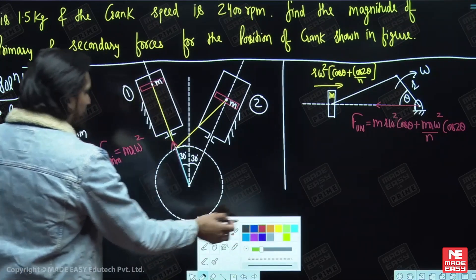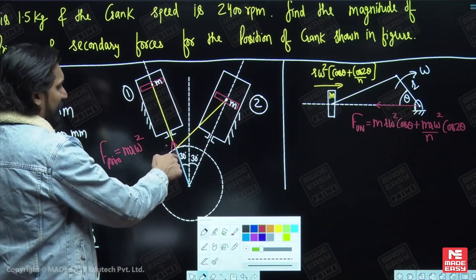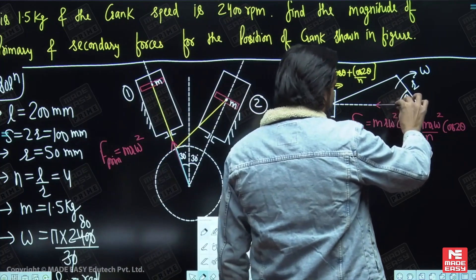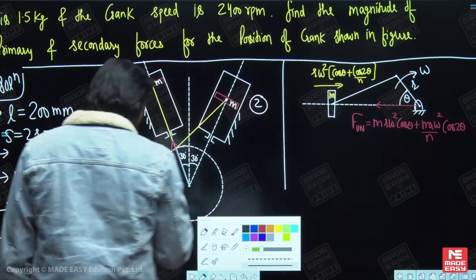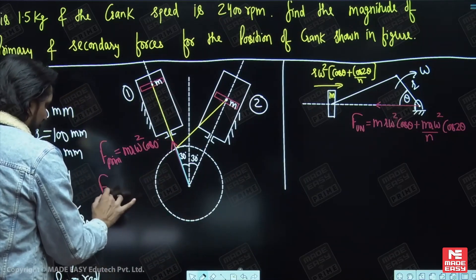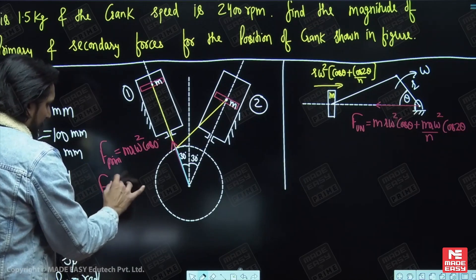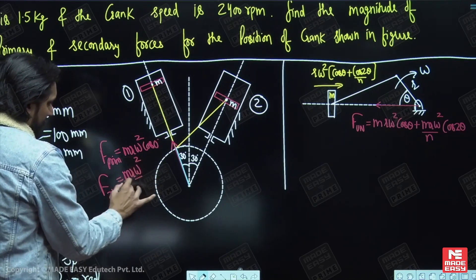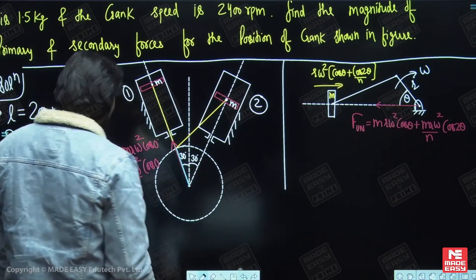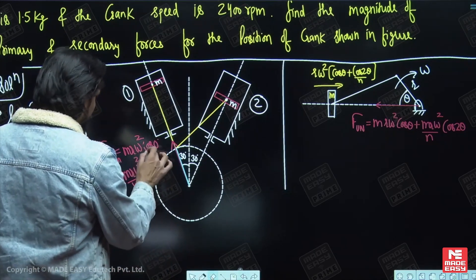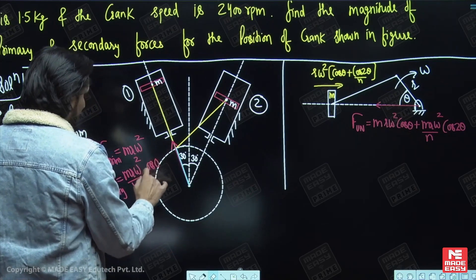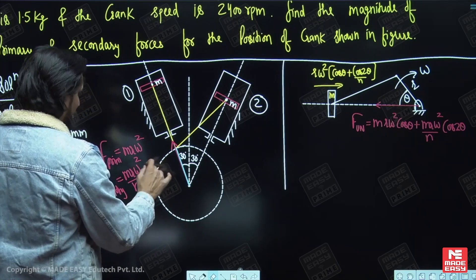The crank is on the line of stroke, so the angle it is making with the line of stroke is 0 degrees. So the primary force is m·r·ω²·cos(0), and the secondary force is m·r·ω²/n·cos(2×0), which also evaluates to 0 degrees argument. Cos(0) is 1, so primary is simply m·r·ω², and secondary is m·r·ω²/n.